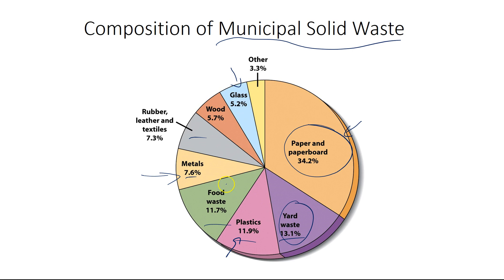On top of that, most of your yard waste and a lot of your food waste could be composted, including wood, although you'd need a wood chipper. So really what we're left with for landfill is rubber, leather, textiles, and other materials. Of course some plastics, some paper, and some food waste may still need to go to a landfill depending on the composting facility.